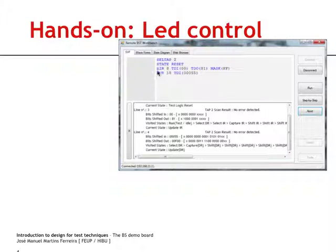The only difference is that this one will take the test access port controller to the shift instruction register state, while this one takes the test access port controller to the shift data register state. In the first case, we are shifting in eight bits, and what we send into test data in is just all zeros. This is a hexadecimal representation, so this is eight zeros.